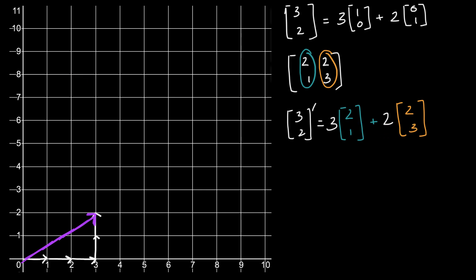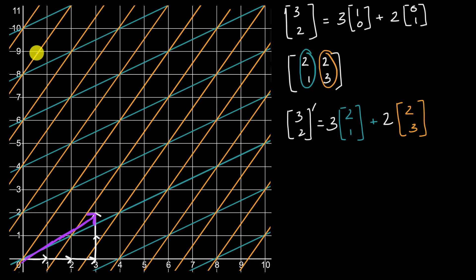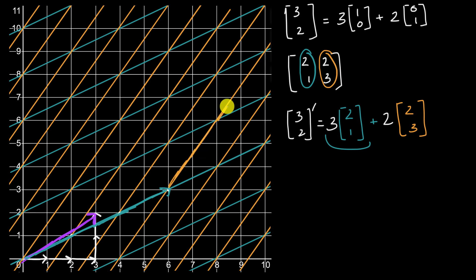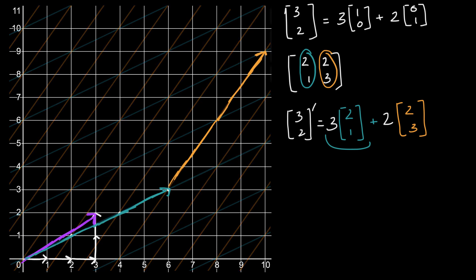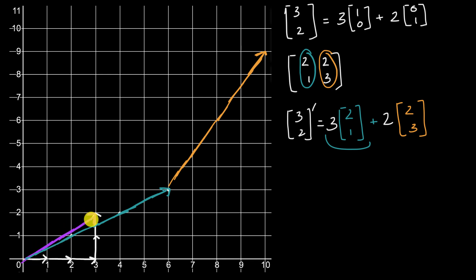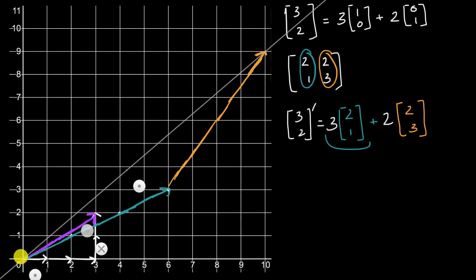And we can graph this. If we have three (2, 1)'s and two (2, 3)'s, what I could do is overlay this extra grid to help us. So (2, 1) is one, two ones; that is two (2, 1)'s; and three (2, 1)'s is right over here. Then to that we add two (2, 3)'s — so two and then three, one, two, three — and we end up right over there. So we have here in purple our original (3, 2) vector, and now the image is going to be three (2, 1)'s plus two (2, 3)'s.